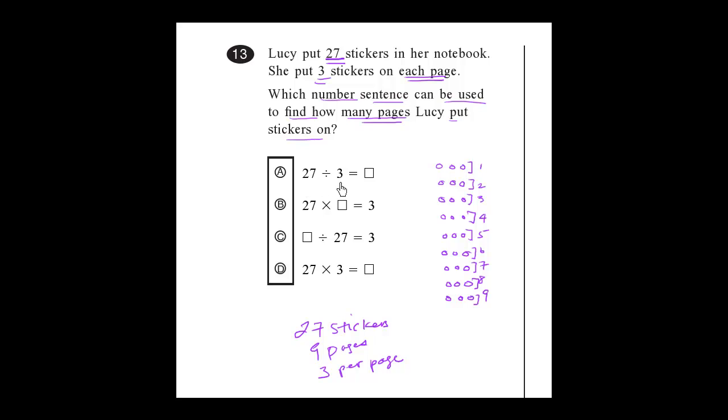27 divided by 3. Well, 27 divided by 3 actually is 9. That's actually the correct answer.